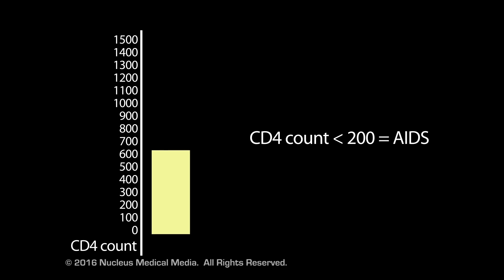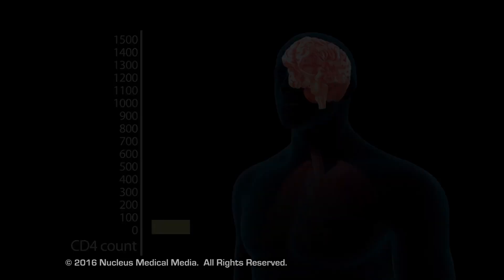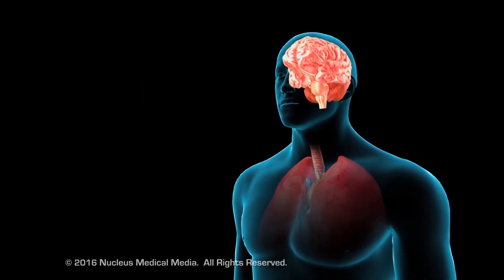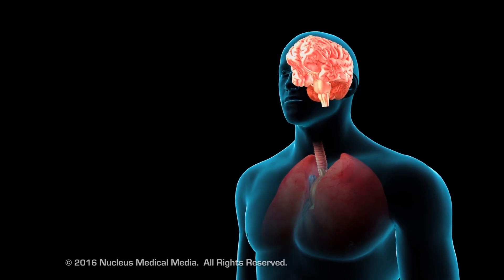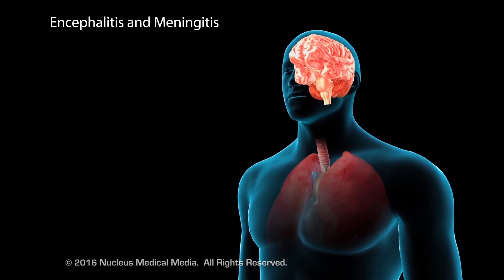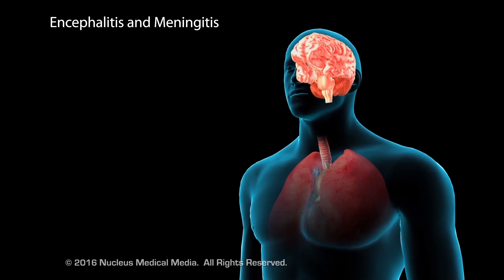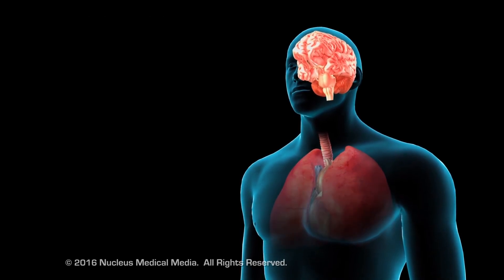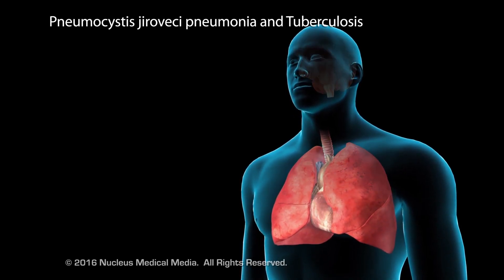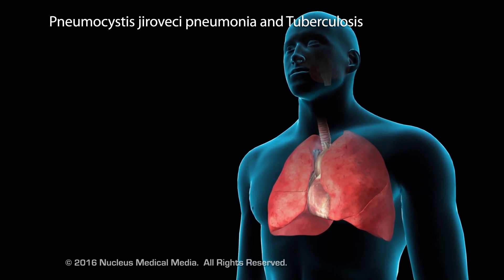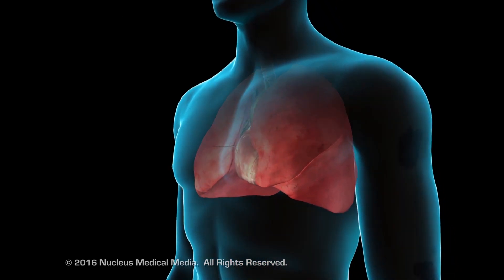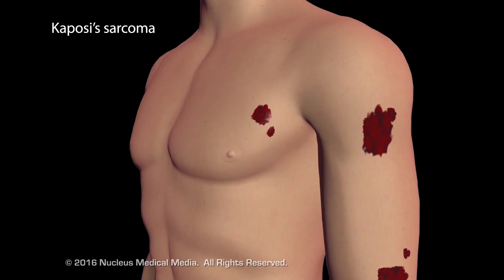This can take as long as 10 years from the time a person is infected with HIV. This low CD4 count increases susceptibility to opportunistic infections, such as encephalitis and meningitis, debilitating illnesses such as Pneumocystis jirovecii pneumonia and tuberculosis, and cancers such as Kaposi's sarcoma.